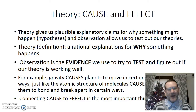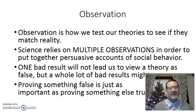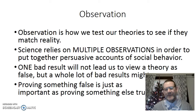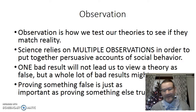For example, gravity causes planets to move in certain ways, just like atomic structures of molecules cause atoms to bond and break apart in certain ways. Connecting cause to effect is the most important thing a theory does. Observation is how we test our theories to see if they match reality. Science relies on multiple observations in order to put together persuasive accounts of behavior. One bad result — we're not going to throw a theory out. We might tinker with our theory a little bit, or come up with a better way of testing it.